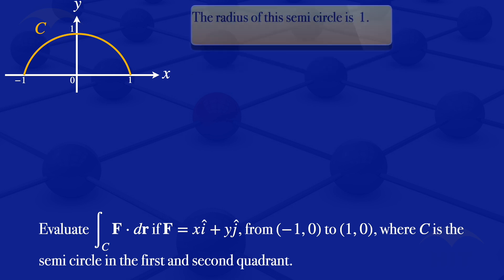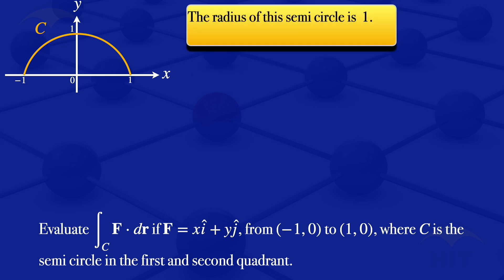The radius of the semicircle is 1, and the equation of a circle centered at the origin is x-squared plus y-squared equals r-squared. So for this semicircle, it will be x-squared plus y-squared equals 1.